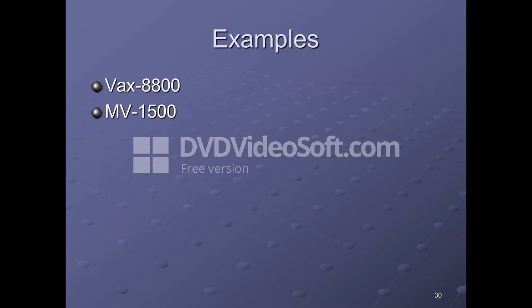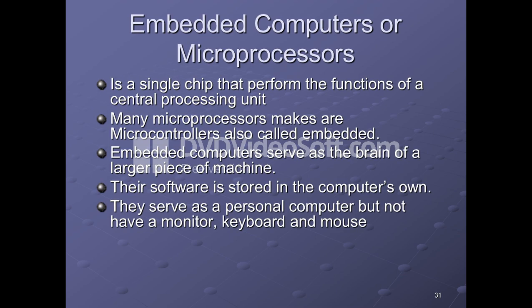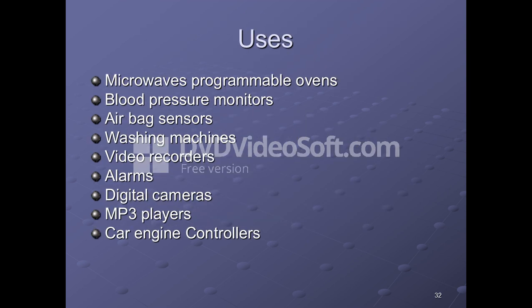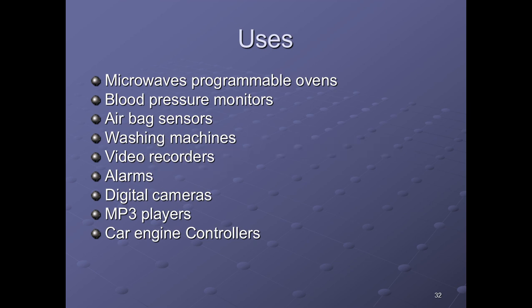Embedded computers are microprocessors — a single chip that performs the function of a computer, including a central processing unit. Many microprocessors and microcontrollers are called embedded. They serve as the brain of a large piece of machinery, with software stored in the computer's own memory. They function like personal computers but do not have a monitor, keyboard, or mouse. Uses include programmable ovens, blood pressure monitors, machine monitors, airbag sensors, washing machines, video recorders, alarms, digital cameras, MP3 players, and car engine controllers.